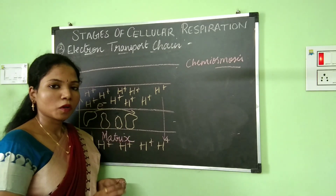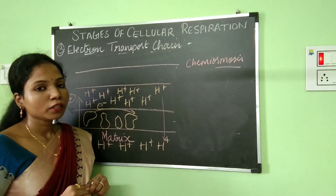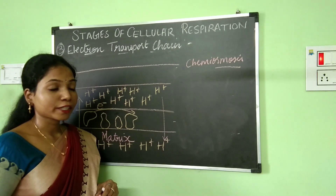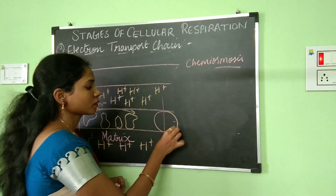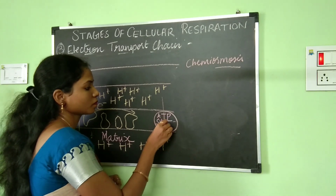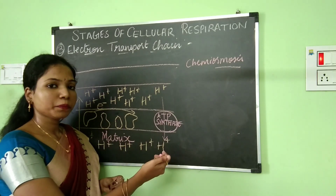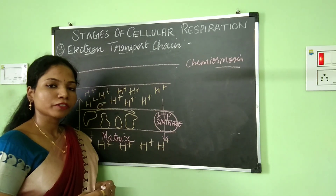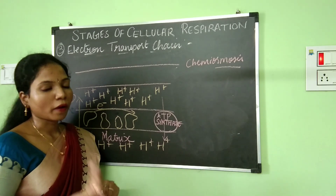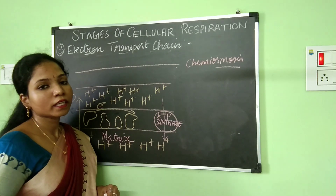The inner mitochondrial membrane is not permeable to ions. So in order to overcome this problem, there is one enzyme which comes into action — ATP synthase. ATP synthase is important because with its help, hydrogen ions can get into the mitochondrial matrix, since the inner mitochondrial membrane is not permeable to ions. ATP synthase brings the hydrogen ions back into the inner mitochondrial matrix.